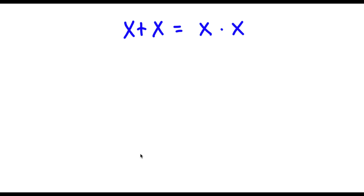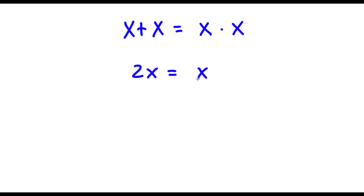So I have x plus x is equal to x times x. Now let's simplify these two sides to start. x plus x is obviously equal to 2x, and x times x is going to equal x squared.